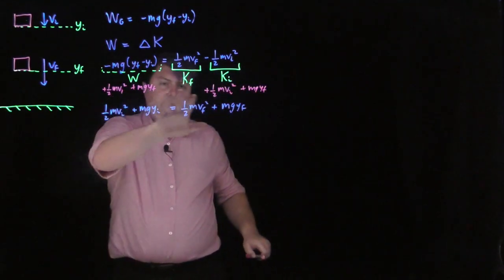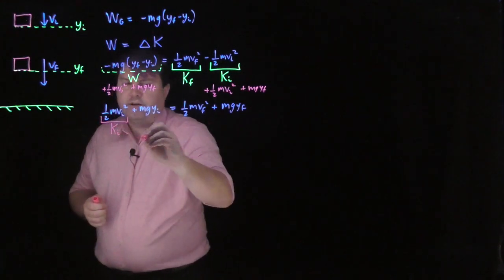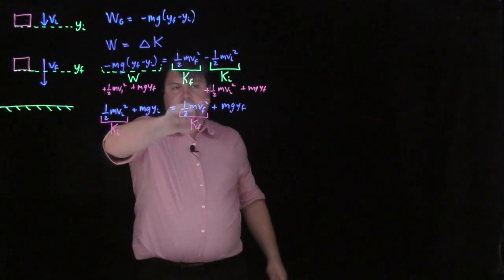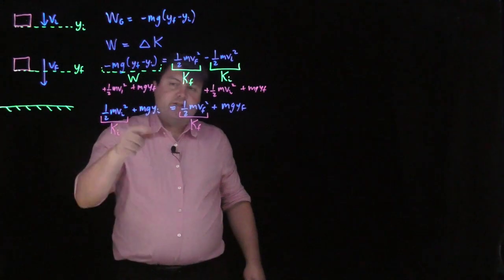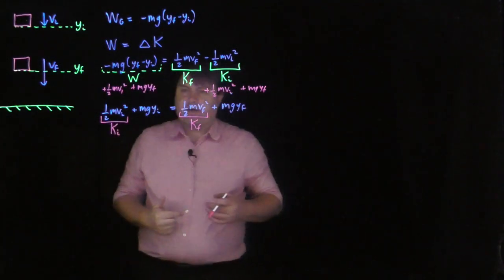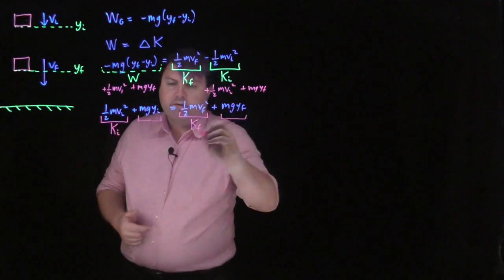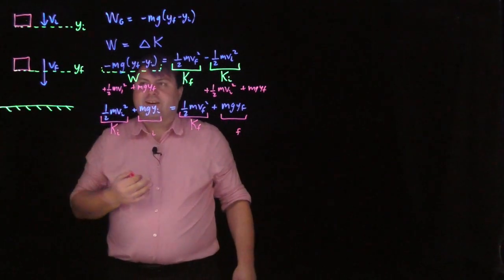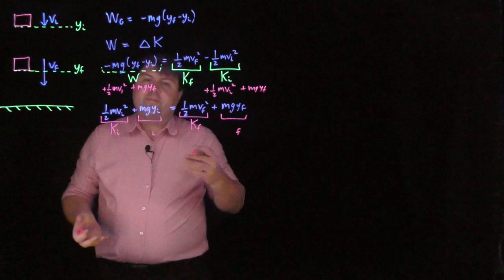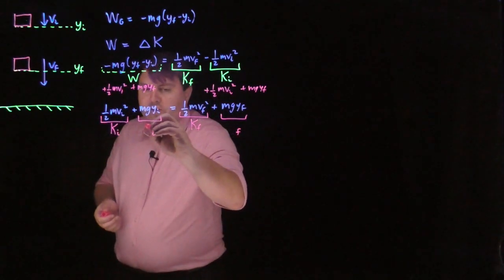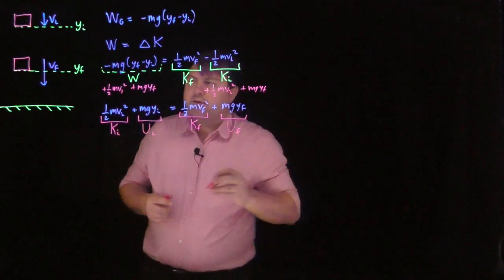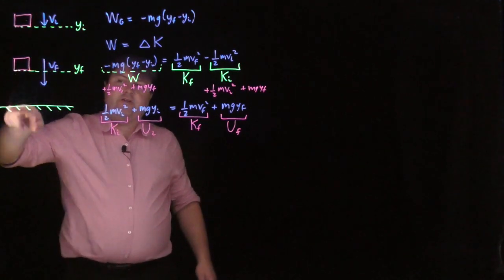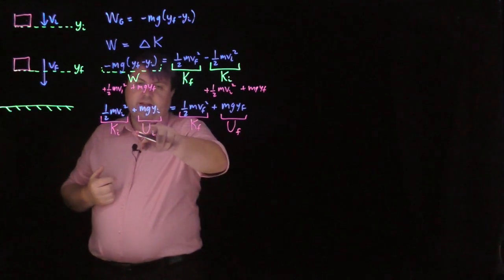Now we have all the initials on one side and all the finals on the other. We still have our kinetic energies — this is the initial kinetic energy and this is the final kinetic energy. But now we have to think about what exactly mg·yi and mg·yf are. If they're being added to kinetic energies, they have to be another type of energy with the same units and same concept. Capital P for potential energy is no longer available — capital P is for power — so we're going to use capital U as our potential energy, borrowing from electromagnetics. What we're saying is if this box is up high, it has more potential to be converted into kinetic energy, thermal energy, or some other type of energy. So these terms are our Ui and Uf.